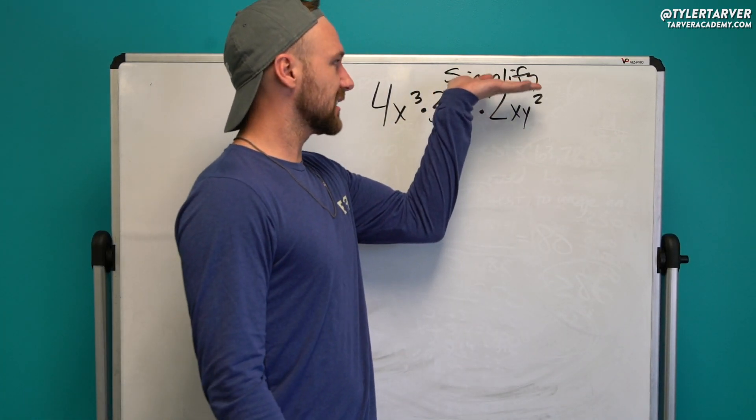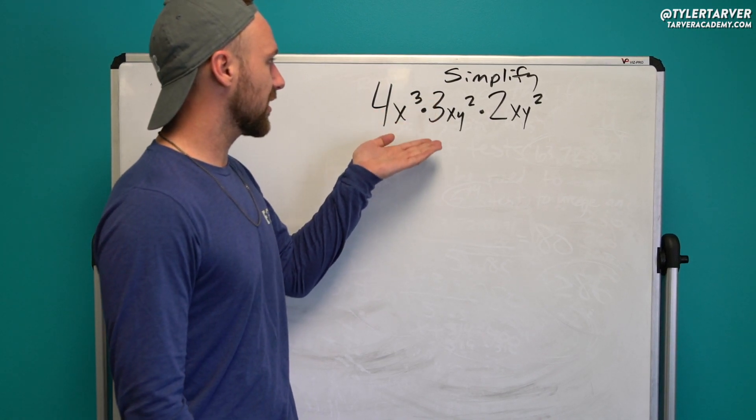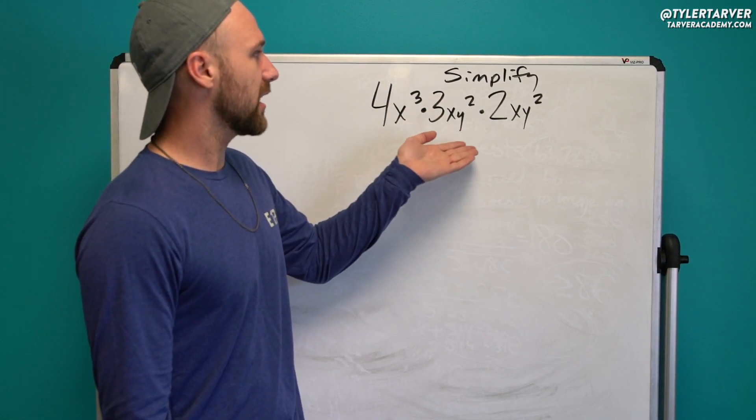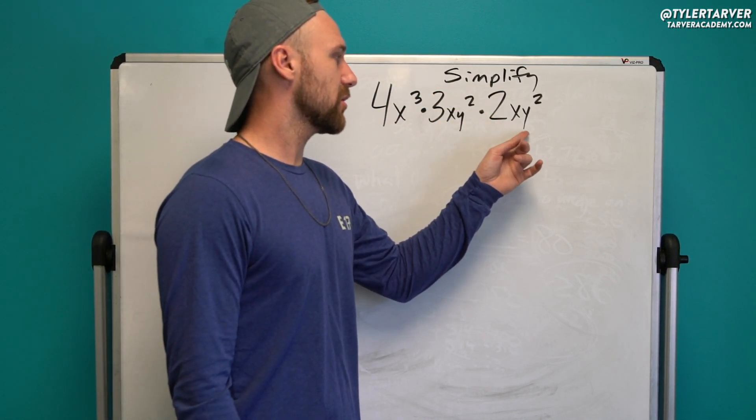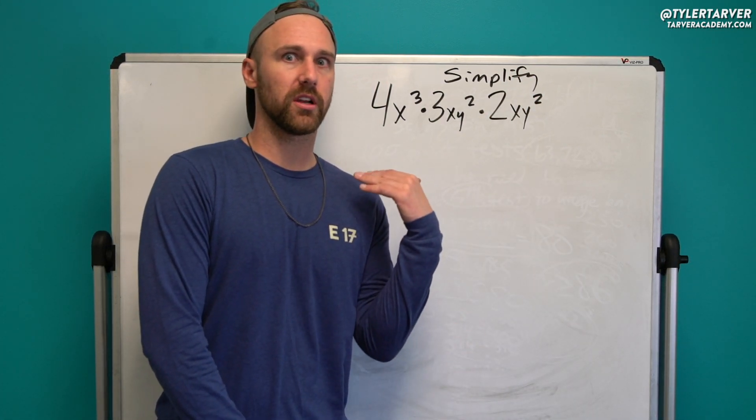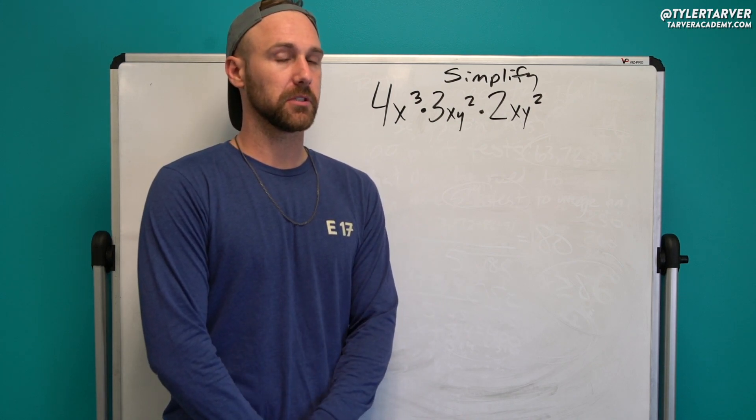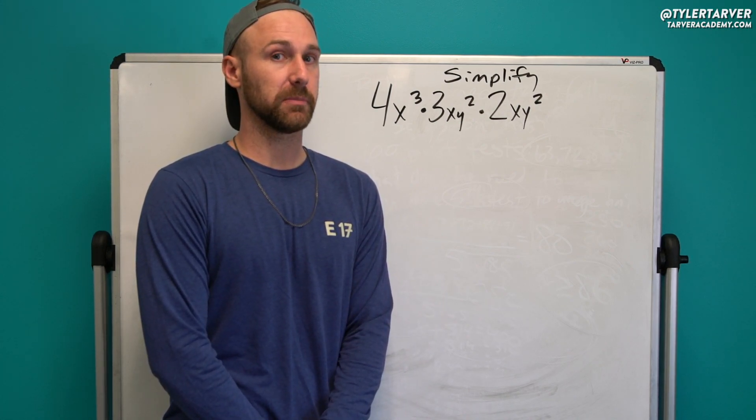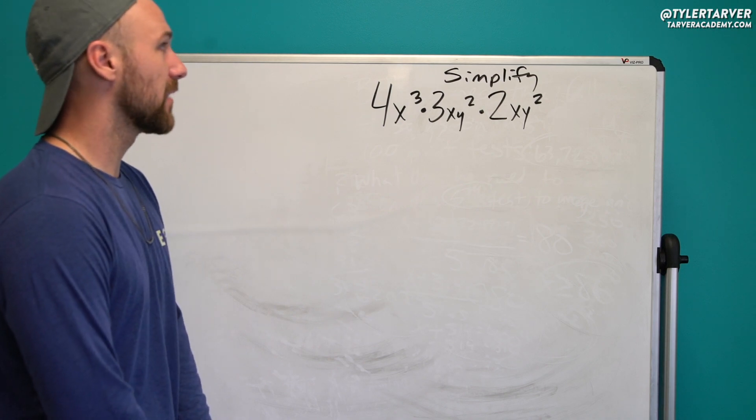Alright, so today we're gonna look at simplifying 4x to the third, or 4x cubed, times 3xy squared times 2xy squared. So I'm gonna let you go ahead and work this and then I'll work it and we'll see if we got the same answer. Go ahead, pause it.